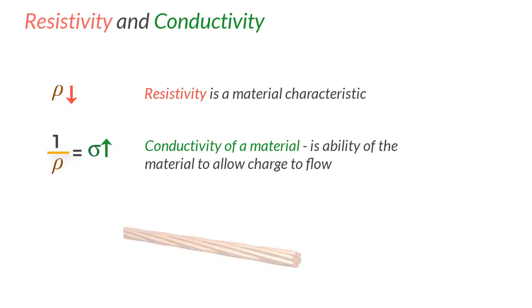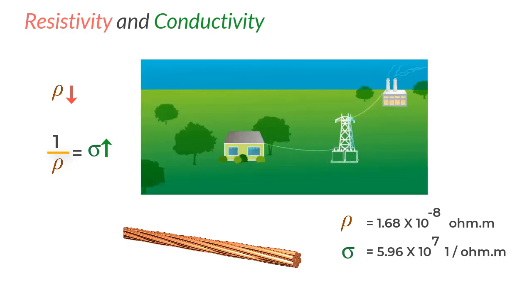As an example, we could take copper that has a resistivity of 1.68 into 10 to the power minus 8 ohm meter which is very very low and if you take its reciprocal what you get is 5.96 into 10 to the power 7 that is very very high essentially indicating that it has very high conductivity and that is precisely the reason why copper is used in making electric wires because it helps easy movement of electrons and therefore the current through the length of the wire.